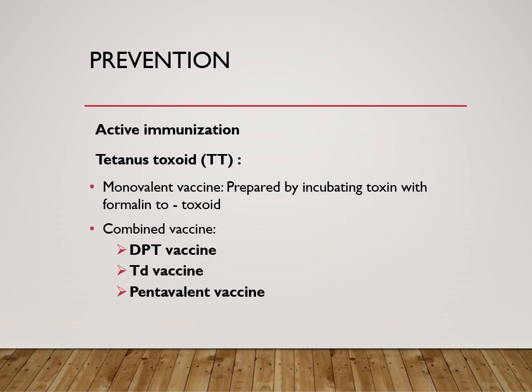For prevention, active immunization — tetanus toxoid is available and must be given as part of the universal immunization schedule. It is prepared with the help of the toxin, which has been inactivated with formalin to form the toxoid preparation.